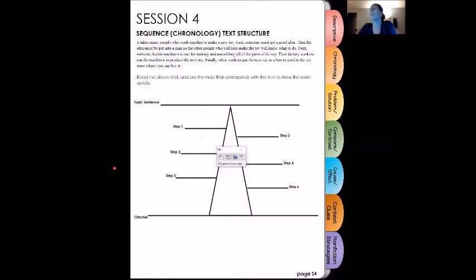Our passage says, it takes many people who work together to make a new toy. First, someone must get a good idea. Then the idea must be put into a plan so that other people who will help make the toy will know what to do. Next, someone builds machines to use for making and assembling all the parts of the toy. Then factory workers run the machines to produce the new toy. Finally, other workers put the new toy in a box to send to the toy store where you can buy it.